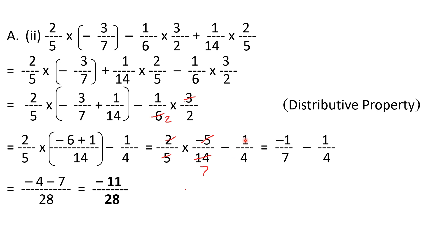Now we have minus one by seven minus one by four. The LCM of seven and four is twenty-eight. Minus one by seven becomes minus four by twenty-eight, and minus one by four becomes minus seven by twenty-eight. Minus four minus seven gives minus eleven, so the answer is minus eleven upon twenty-eight. Now let's do question number two.